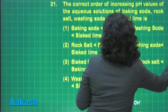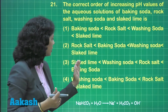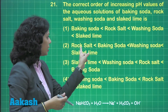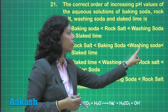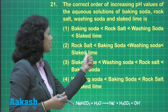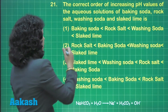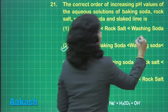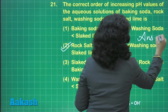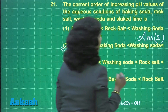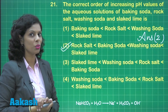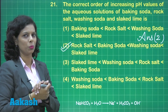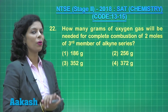Checking the options, the correct increasing order of pH is: rock salt, then baking soda, then washing soda, and finally slaked lime. The correct answer is option 2. Now let's move to question number 22.